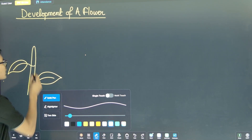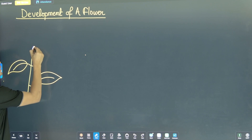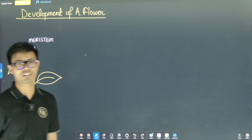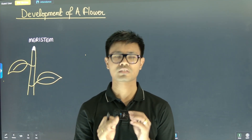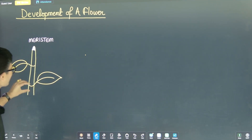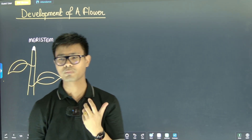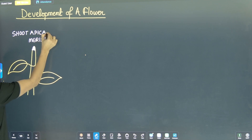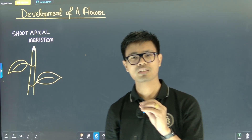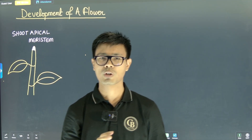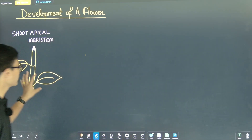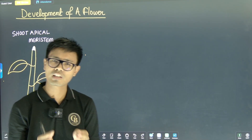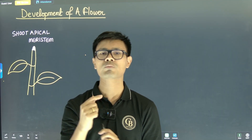There is a meristem here. I will be using purple color. Meristem is a group of dividing cells. We call it shoot apical meristem. I am showing a plant with the stem, leaves, and the shoot apical meristem at the tip. Meristems are the dividing cells. Since it is found in the apex of the shoot, I am using the term shoot apical meristem.